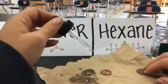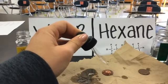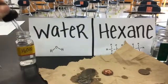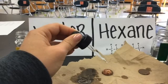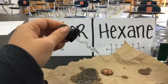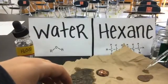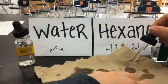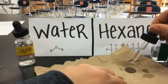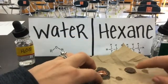Let's go again. Here we go: one, two, three, four, five, six, seven, eight, nine, ten, eleven, twelve, thirteen, fourteen, fifteen, sixteen drops — and it falls. Now let's go to hexane. One, two, three, four, five, six, seven — and it already spills over. So 16 drops for water on our penny, and only seven for hexane.